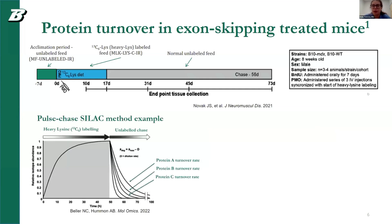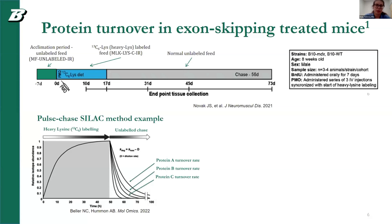By looking at the relative isotope abundance, relative isotope abundance increases over feeding of heavy lysine. When that feeding stops, that is our unlabeled chase period. Different proteins degenerate and regenerate at different rates, and we can track this rate and determine individual turnover rates for different proteins. In this example, protein A has a longer turnover than protein C, and protein A has a higher half-life as well.